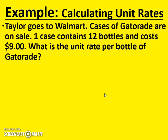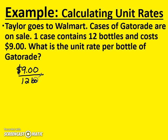Let's look at an example. Taylor goes to Walmart. Cases of Gatorade are on sale. One case contains twelve bottles and costs nine dollars. What is the unit rate per bottle of Gatorade? Let's first begin by writing a rate: nine dollars compared to twelve bottles. Now to make this a unit rate, we have to get it down to only one bottle, because by definition a unit rate is a comparison of how much money for one.